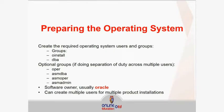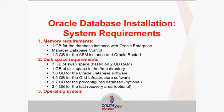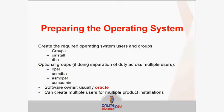Preparing the operating system: you need to create different groups. The two main groups are O-install and DBA. Note that you did not experience this because we used the Express Edition — this applies to Oracle Enterprise Edition. The optional groups you can create are OPER, ASM DBA, ASM OPER, and ASM Admin. The software owner is usually named Oracle, and you can create multiple users for multiple product installations.